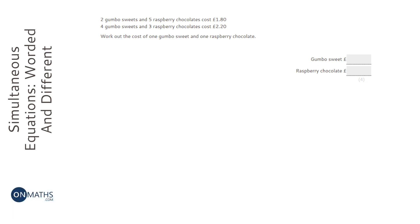However, if you imagine S represents the price of the gumbo sweets and C represents the price of the raspberry chocolates, we can write these two pieces of information as equations. So 2S plus 5C equals—and I'm just going to leave it in pence rather than pounds—180.